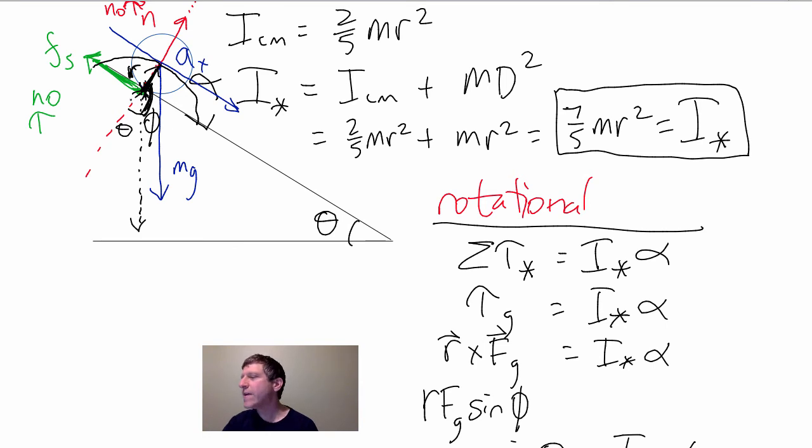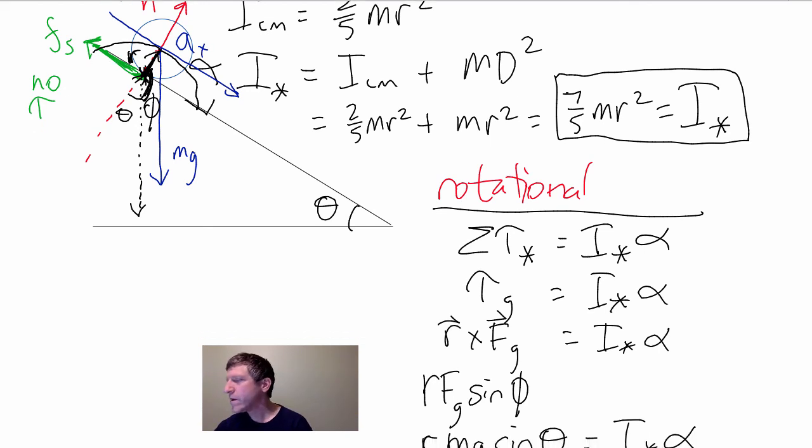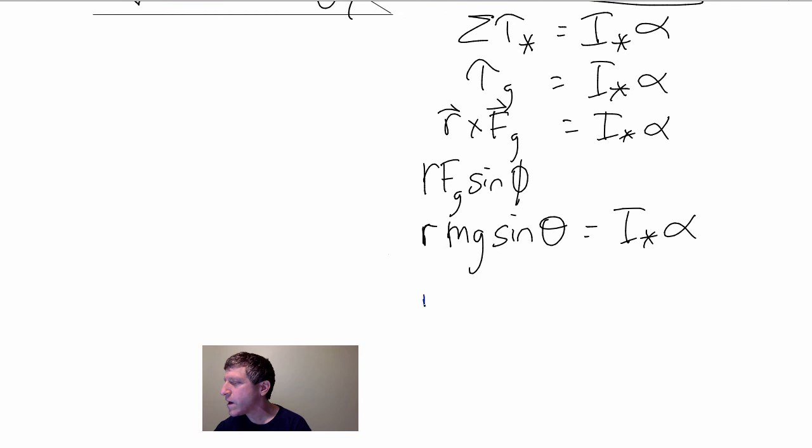...it is true that if alpha is that way, and AX is going to be R alpha again. Because it's the same R, it will be R alpha, the same R as it will always use. So, this becomes R M G sine theta equals I star times A over R.